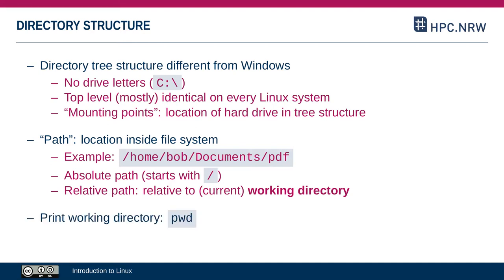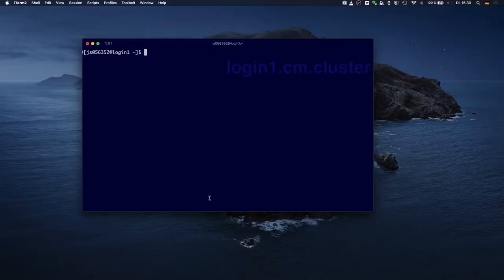You can always tell where in the file tree you are by typing the command pwd, which stands for print working directory. That will show you the full path to the directory where you are. Here's what it looks like: you type pwd and you can see the absolute path to your home directory.